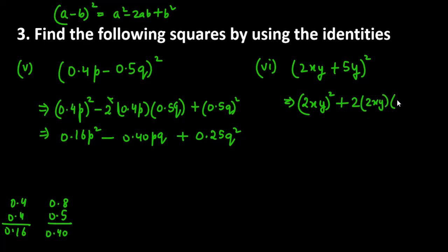Sixth part is 2xy plus 5y ka whole square. a square plus 2 into ab. A is 2xy, B is 5y. Last me b ka square which is 5y square. So 2xy ka square is 4x square y square plus 2 into 2 is 4, 4 into 5 is 20. 20xy square. It is 25y square.